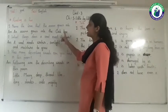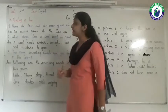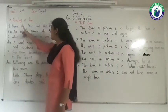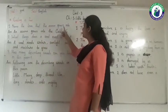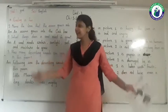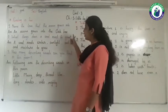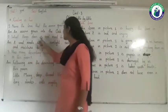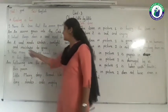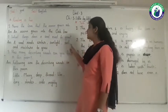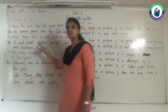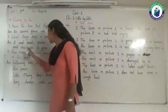Now let's see all questions and answers again - I am going through them two times, and you all repeat with me. Number 1: Name the tree that the acorn grows into. Answer: An acorn grows into the oak tree. Number 2: What things does a seed need to grow? Answer: A seed needs water, sunlight, soil, and moisture to grow.